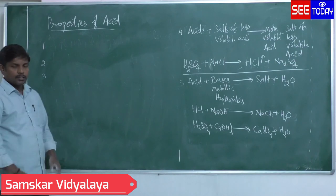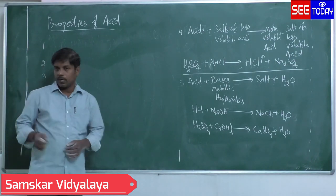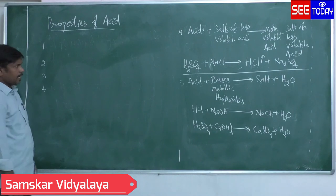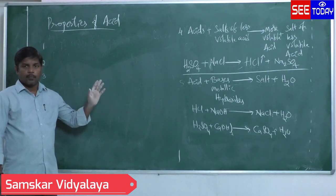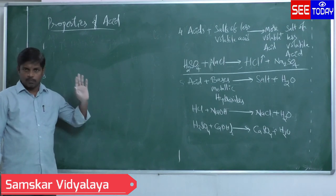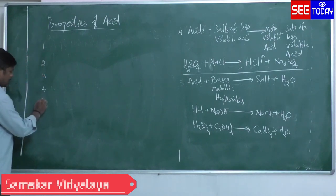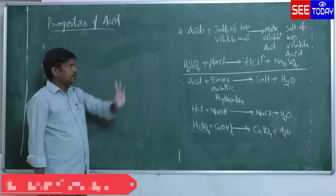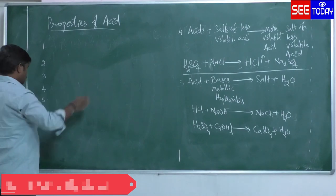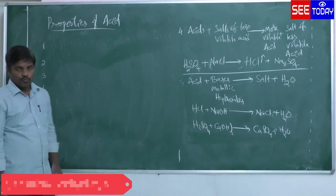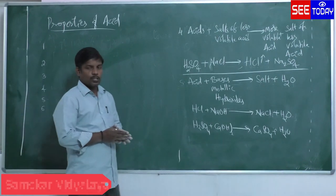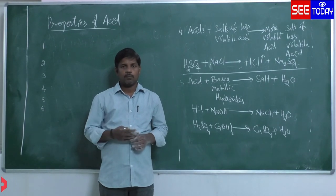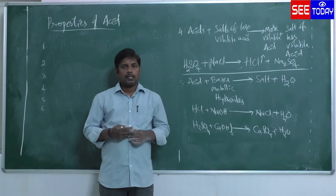Whenever you take a strong acid the bulb glows with brightness, and whenever you take a weak acid it glows with dimness. Most non-metallic manmade acids are strong acids. So these are the properties of acids — we discussed mainly six properties: acids react with bases to form salt and water; acids react with metallic oxides to form salt and water; acids react with metals to release hydrogen gas; acids react with metallic carbonates to form salt, water, and carbon dioxide; acids react with salts of less volatile acids to release more volatile acids; and acids are very good conductors of electricity. In the next class, let us learn about some uses of acids. Thank you, have a nice day.